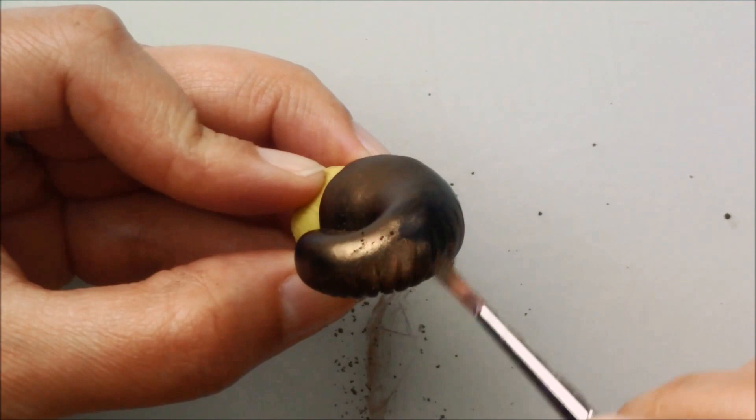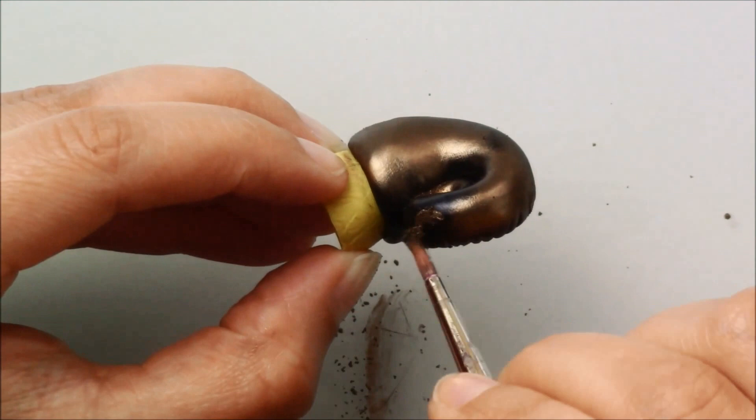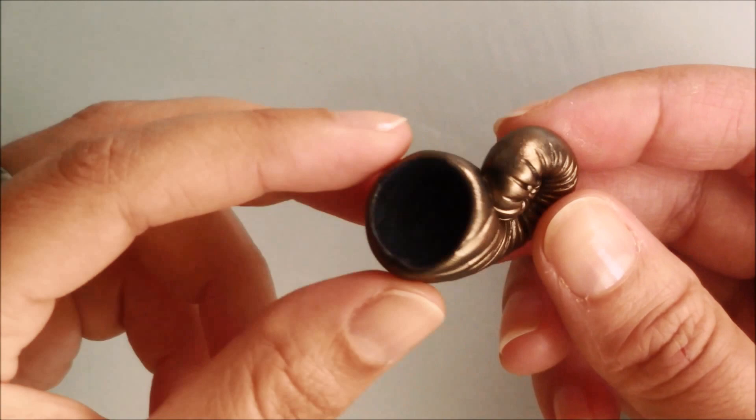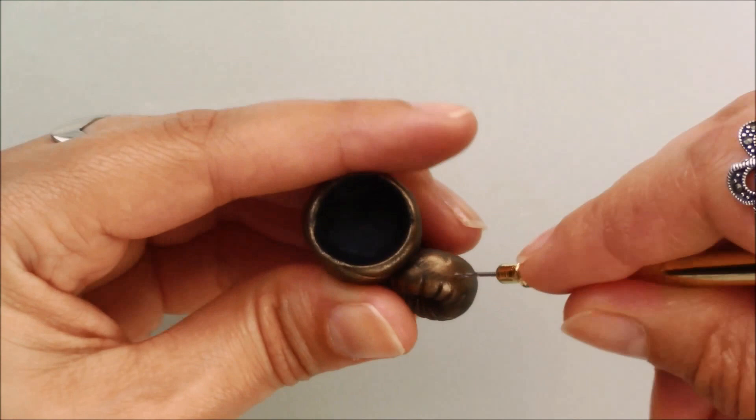Once my pendant was all dusted, I baked it for 30 minutes at 110 degrees Celsius. Once cool, I removed the base from the shell. I marked where I wanted the screw bail to be, and using a nail art piercing drill, I made a hole. If you don't have one of these, you can poke a hole with a needle before baking it.